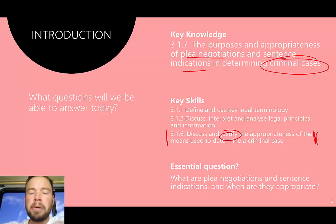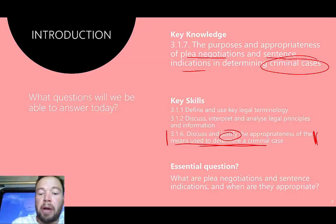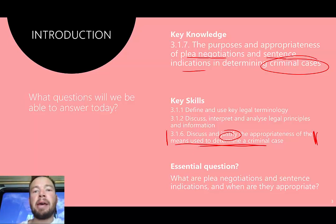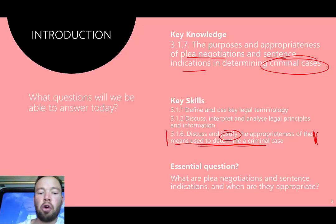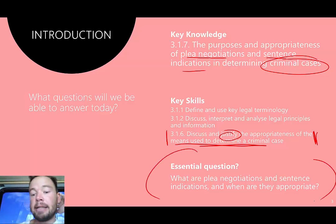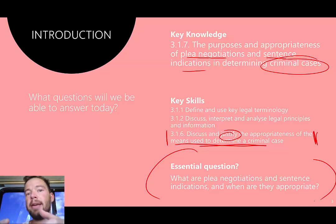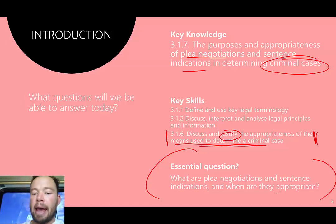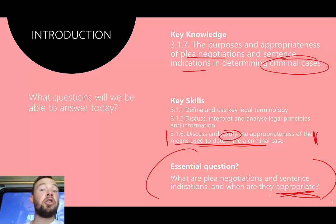The other means to determine a criminal case is just to have a trial — we won't go into a lot of depth there because so many other dot points cover that. Our central questions today are: what are plea negotiations and what are sentence indications? How do they work — what is their mechanism? And when are they appropriate versus when do we not want to use them?